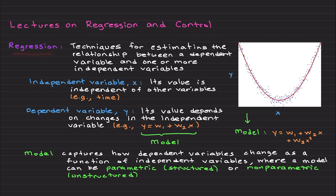What do we mean by regression? Regression is basically a collection of techniques for estimating the relationship between a dependent variable and one or more independent variables.